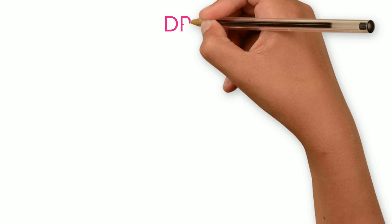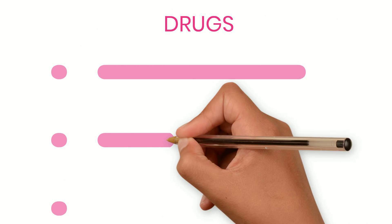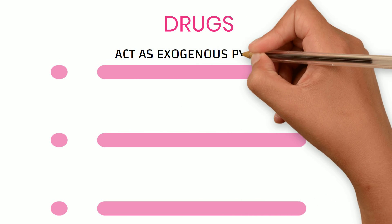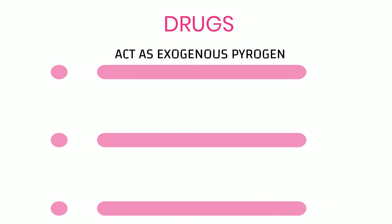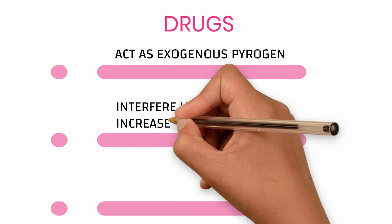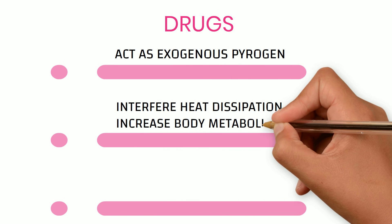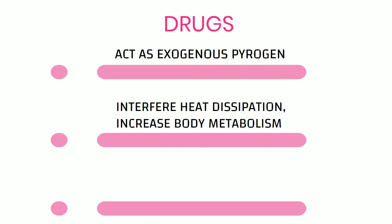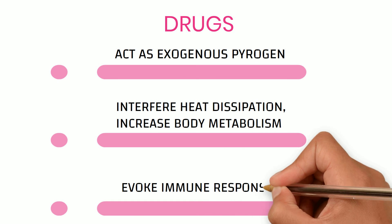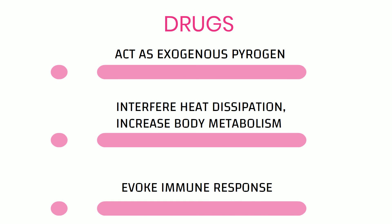Finally, how do drugs cause fever? They can act as exogenous pyrogens, as already seen, or they can interfere with heat dissipation, or they can increase body metabolism, or they can evoke an immune response resulting in fever.